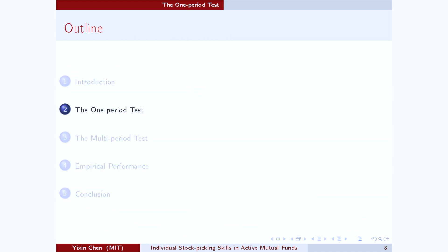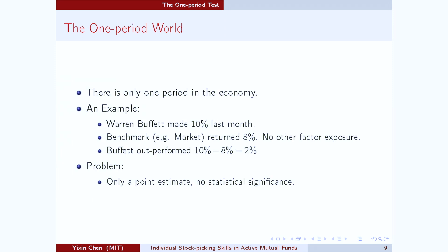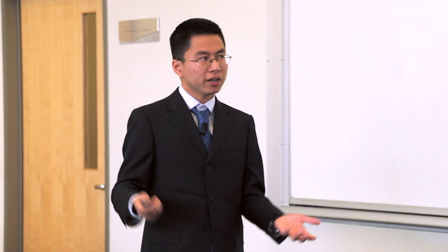Let's first stay in a single period. Say that Warren Buffett made 10% last month. How do we know if 10% is good or bad? What we do now is to find Buffett a benchmark. Let's say that the market is the perfect benchmark for Buffett and the market returned 8%. So we figure that Warren Buffett outperformed the market by 2% last month. But the limitation of this approach is that it does not tell us how likely this 2% single-period outperformance is due to random chance. In other words, this investor could just be lucky last month.